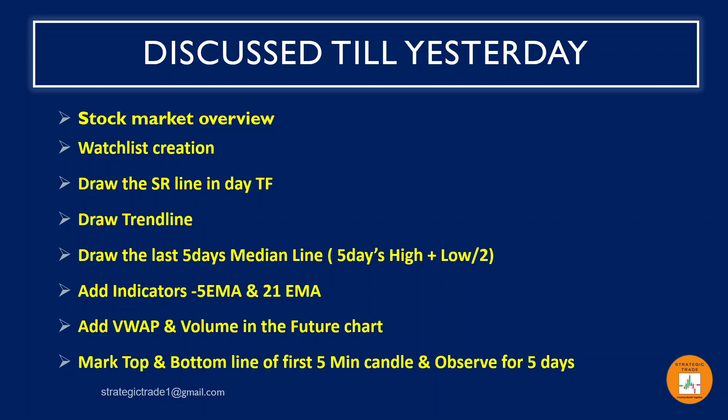We discussed how to draw the trend line and draw the last five days median line. The median line is nothing but last five days high plus last five days low divided by two. Then how to add the indicators — we want only two EMAs: one is 5 EMA and another is 21 EMA. We also added the volume weighted average price (VWAP) and volume in the futures chart. Yesterday we also informed you to mark the top and bottom of the first five-minute candle and observe for the next five days.